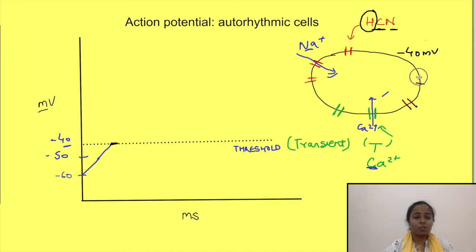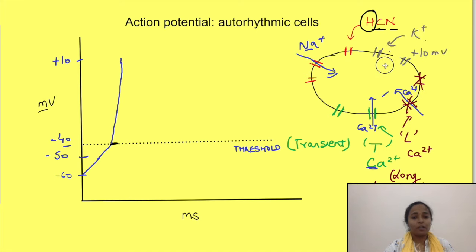At this voltage, voltage-gated L-type calcium channels open, where L stands for long-lasting because they are open for a little longer time. This also causes calcium to move from outside to inside until the potential reaches plus 10 millivolts. By this time, calcium channels close and voltage-gated potassium channels open. Now since the gradient for potassium ions is from inside to outside, they move from inside of the cell to outside. This starts bringing the potential back towards negative until it reaches minus 60 millivolts.